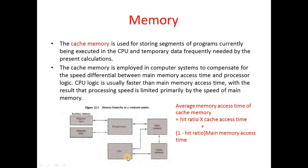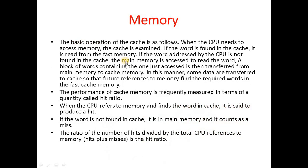So average memory access time = hit ratio × cache memory access time + (1 − hit ratio) × main memory access time. If the data is found in cache (hit), we use the cache access time; for the remaining attempts (misses), we use the main memory access time. This is the defined method for calculating average access time.